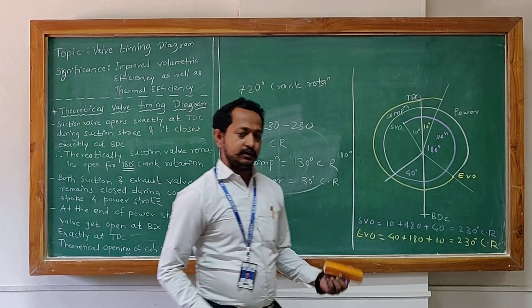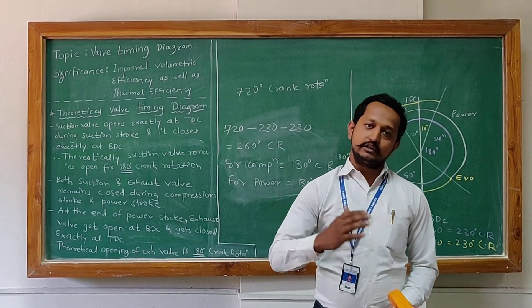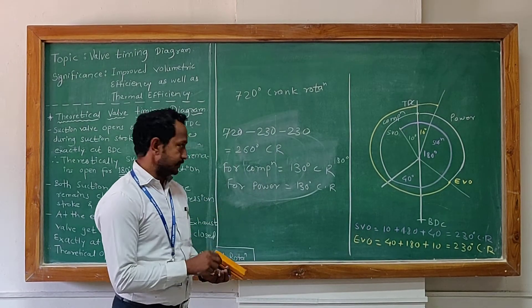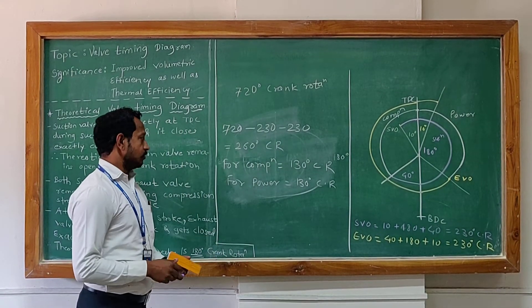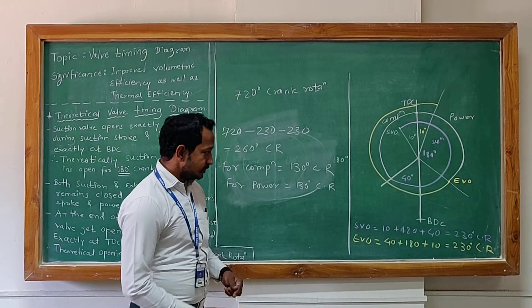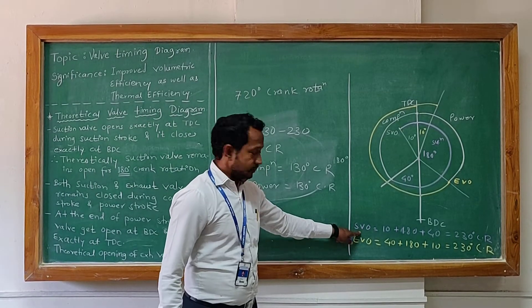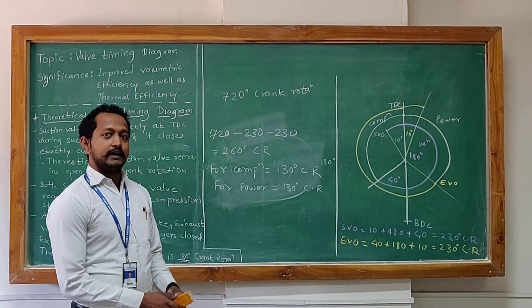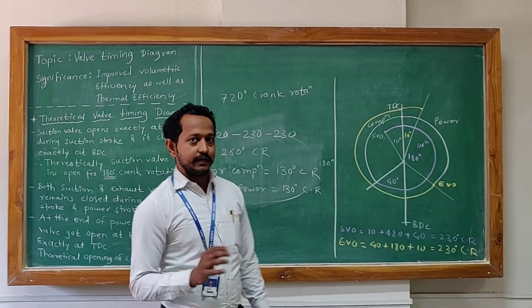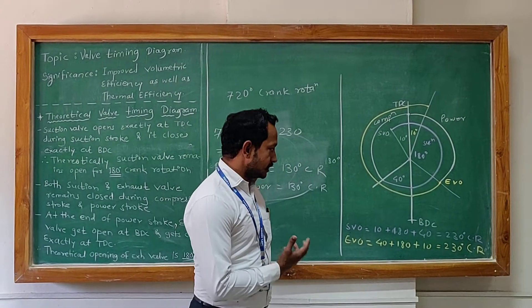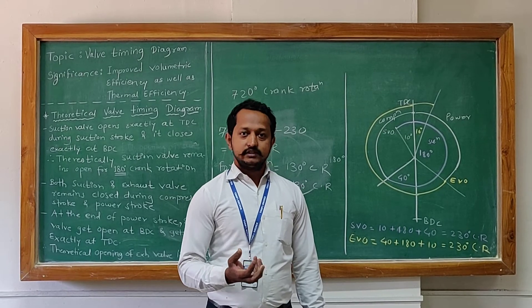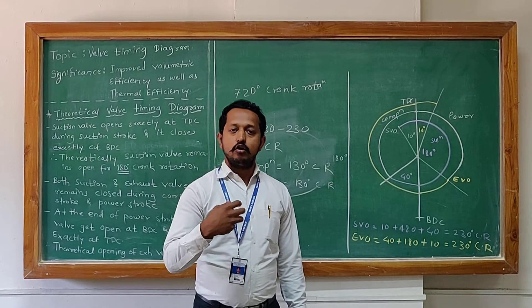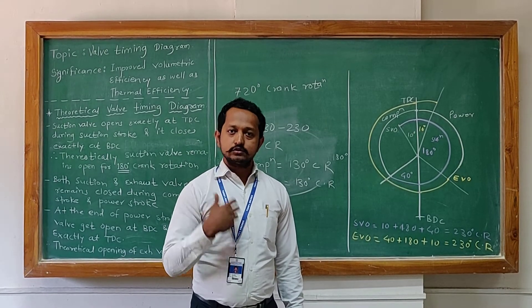This 130 and 130 may be somewhat lesser or more by about 20 degrees. So the tolerance is plus or minus 20 for compression and power. But if you see, the suction valve is kept open for 230 degrees crank rotation, whereas in the theoretical diagram it was for 180 degrees crank rotation. So the additional 50 degrees crank rotation is an advantage, where we can use it for suction of fresh charge — more suction of fresh charge.